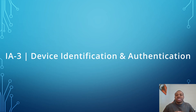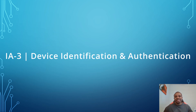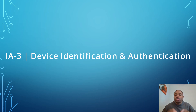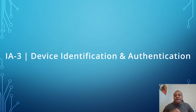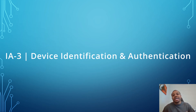What are some of the evidence that we can request to satisfy IA3 control? We can request for screenshots of how host names are used to uniquely identify information system components. We can also request for device authentication for routers, switches, and wireless devices. Examples include 802.1X, EAP, radio servers, TLS, and Kerberos.